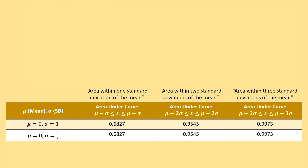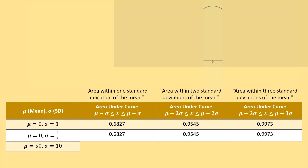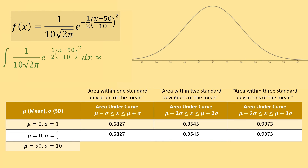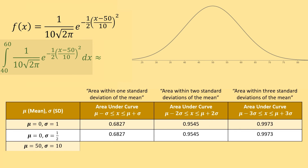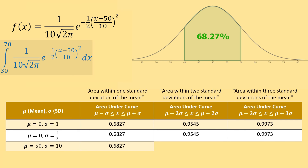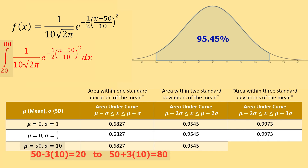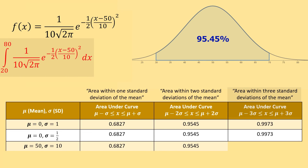Let's actually change our mean. Let's set our mean to 50 and our standard deviation to 10. The normal distribution is now centered at 50 and more spread out. To find the area within one standard deviation: 50 minus 10 is 40, and 50 plus 10 is 60 — so the integral from 40 to 60 is 0.6827. The integral from 30 to 70 gives 0.9545. And the integral from 20 to 80 gives 0.9973.